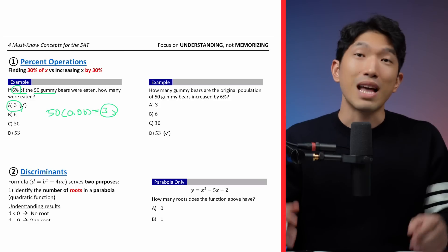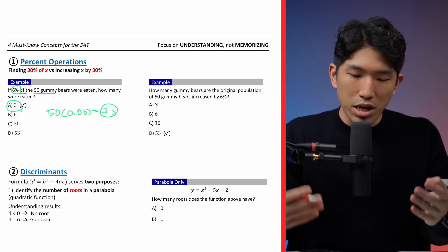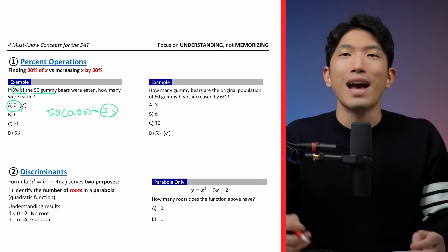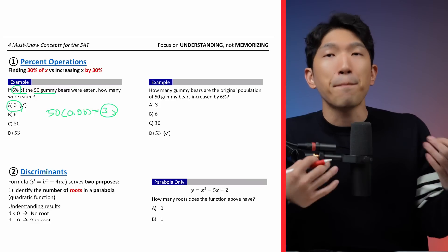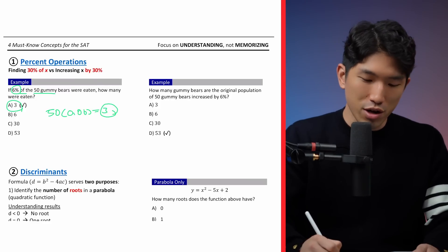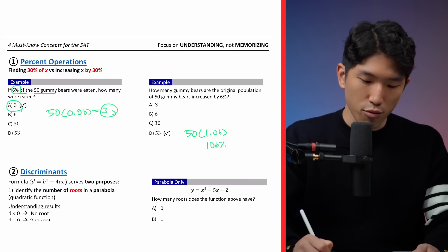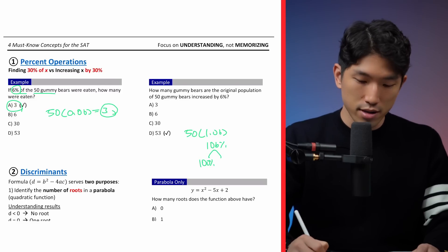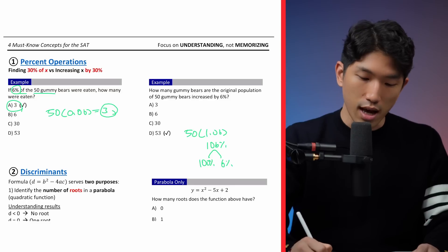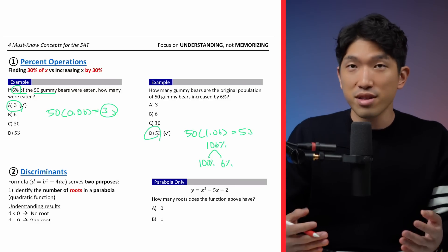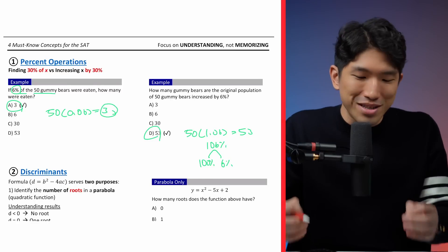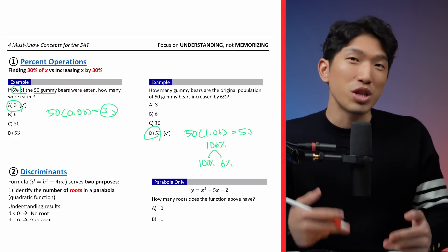Our answer is choice A. Now that was pretty simple, but what if the question asks: how many gummy bears are there if the original population of 50 has increased by 6%? Now we're not just talking about 6%, but increasing it by 6%. So what you need to do here instead is 50 times 1.06, because 1.06 is 106%, which is a combination of 100% original plus the 6% increase. Doing so gives you 53, which is choice D. When the questions get hard for level 3, 4, 5 questions, they are still going to use the same idea.